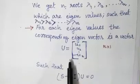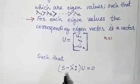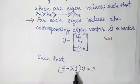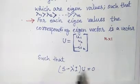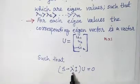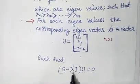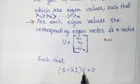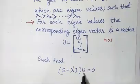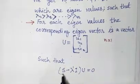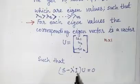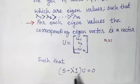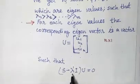To find the eigenvector, solve the equation: (S minus lambda_i times I) times U equals 0, where lambda_i is each eigenvalue, U is the corresponding eigenvector, S is the covariance matrix, and I is the identity matrix. We solve this equation for each eigenvalue to get the corresponding eigenvector U.